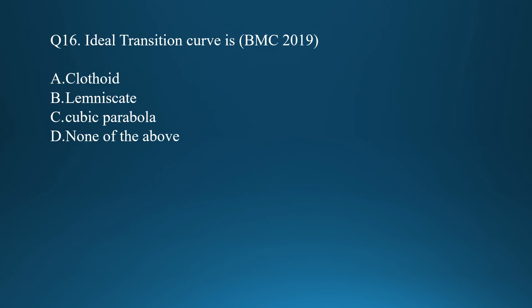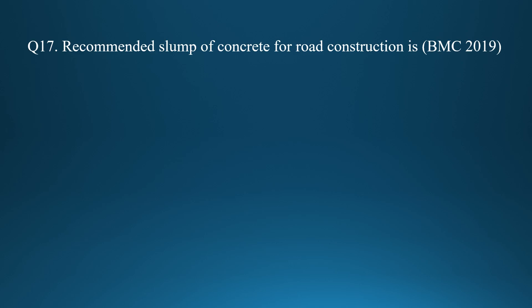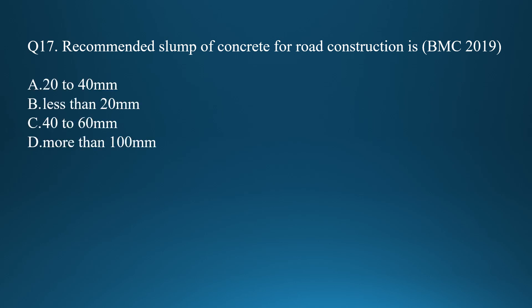Question fifteen: the ideal transition curve is the clothoid. Option A is correct. Question sixteen: the recommended slump of concrete for road construction is 20 to 40 mm.